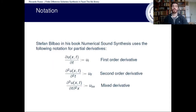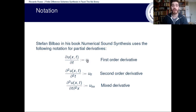Let me make a parenthesis on the notation we will be using. This is the same notation used by Stefan Bilbao in his book Numerical Sound Synthesis, and it's basically just a way for writing partial derivatives. Instead of the expanded notation which is most commonly used, we can write it with a subscript variable indicating the variable in which we're going to derive. This notation covers first order, second order, and mixed derivatives.